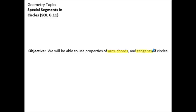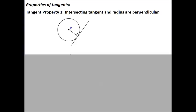So let's start talking about properties of tangents first. The first property of tangents is that an intersecting tangent and a radius are perpendicular. Let's look at our picture here. We have a tangent and that's touching the circle in one place only.